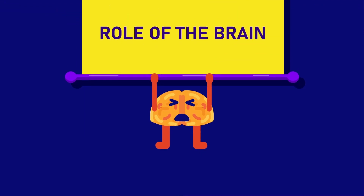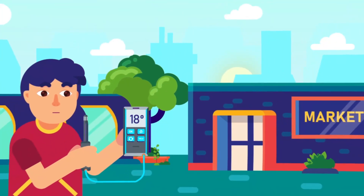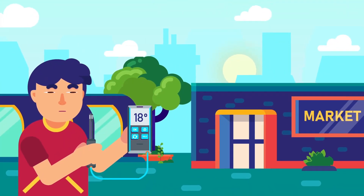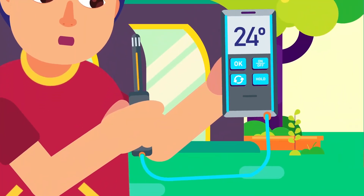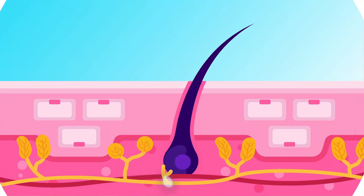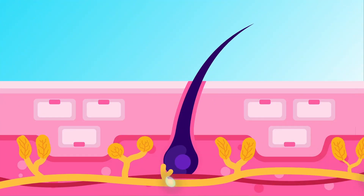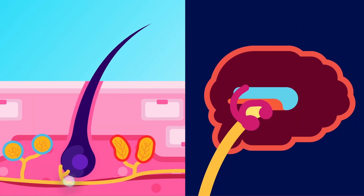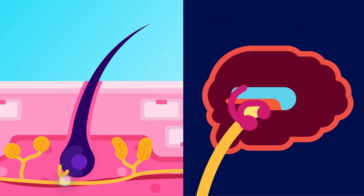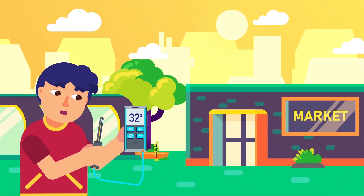Role of the brain: Thermoreceptors are sensory receptors that are sensitive to changes in temperature. The skin has such receptors so that it can sense hot and cold temperatures. Thermoreceptors are connected to the temperature control center in the brain called the hypothalamus.